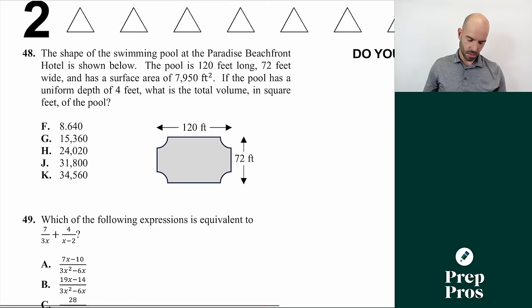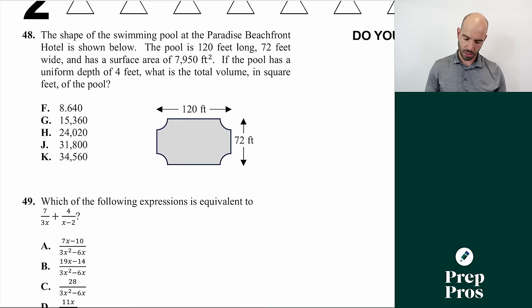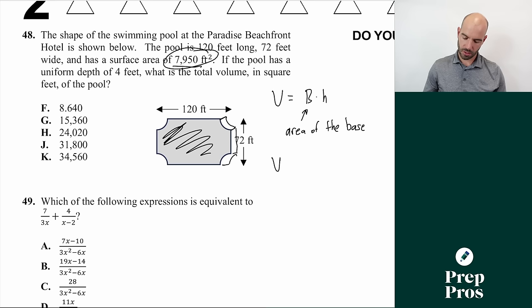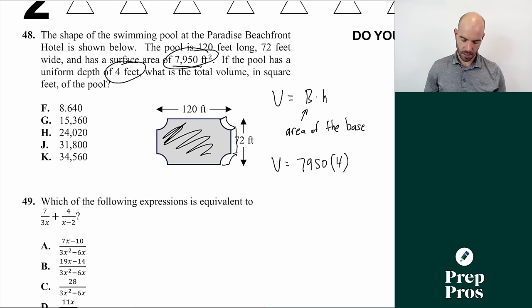Number forty-eight: a hotel pool is 120 feet long, 72 feet wide, has a surface area of 7,950 square feet, and a depth of 4 feet. To find the volume, use volume equals base area times height. The base area is given as 7,950 square feet, and the depth is 4 feet. So volume equals 7,950 times 4 equals 31,800 cubic feet.